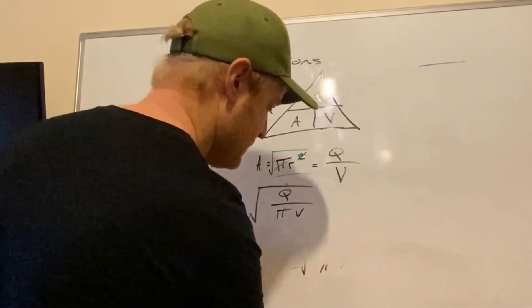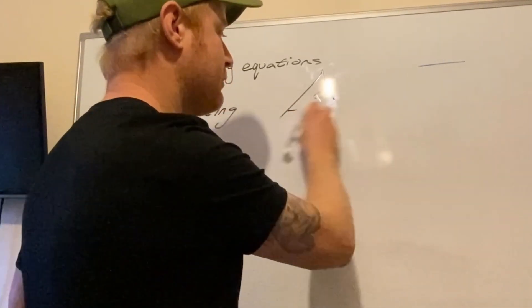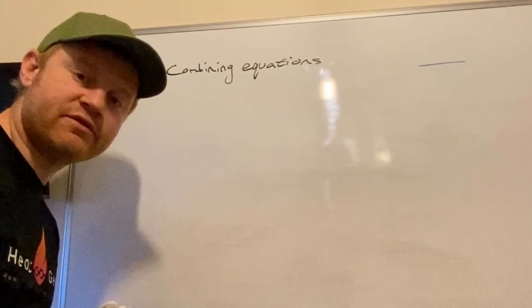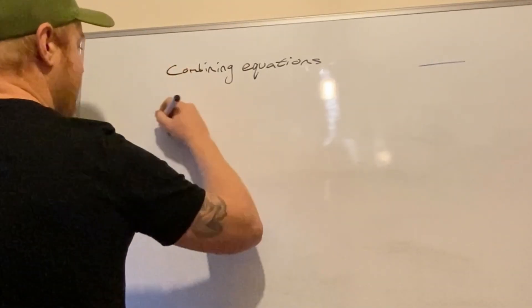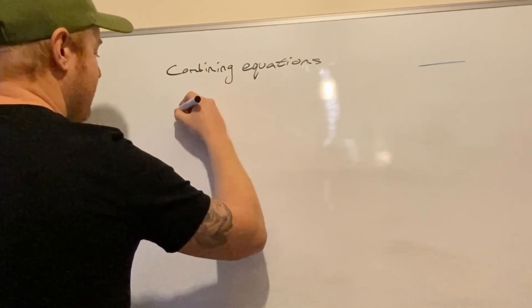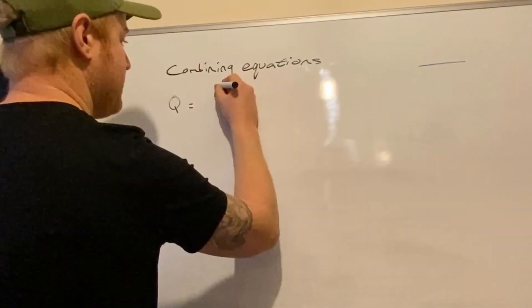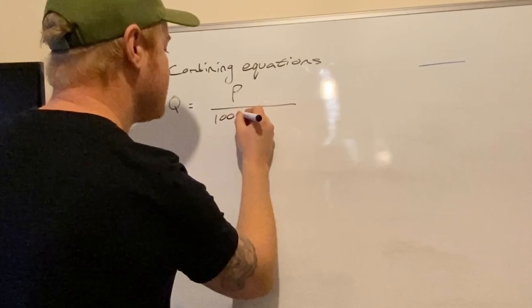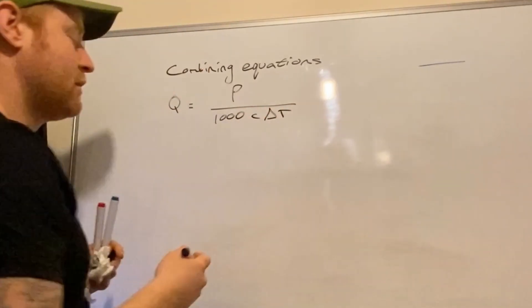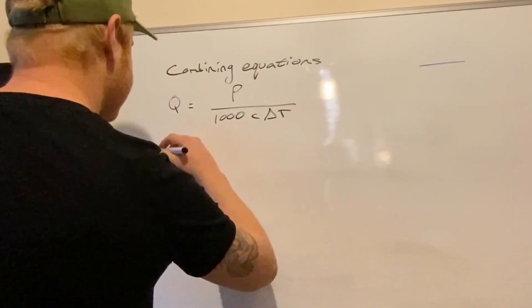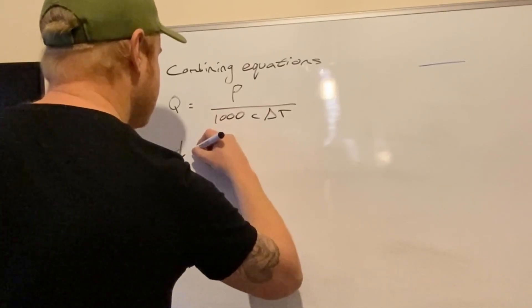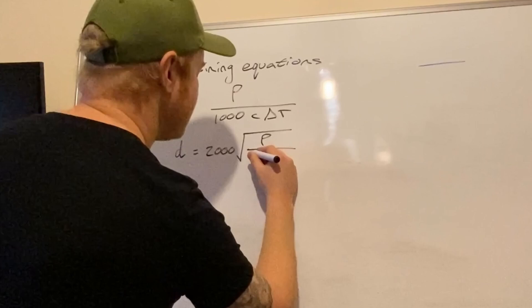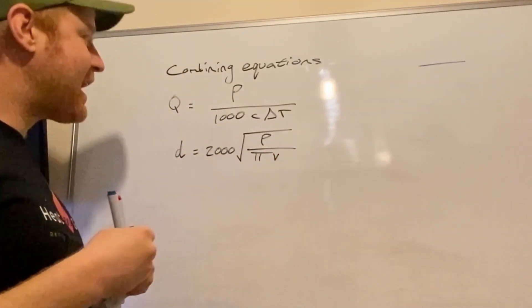So how do we combine them so that we're not working one out, then working another out? Because it's going to save time, right? Just plug it into a single sum and it's going to deliver the result you need. So if we look at equation one, equation one is flow equals power divided by a thousand times specific heat capacity times delta T. Mass flow rate. Our pipe size is diameter equals two thousand times the square root... π... times velocity. There you go. So how do we combine these?